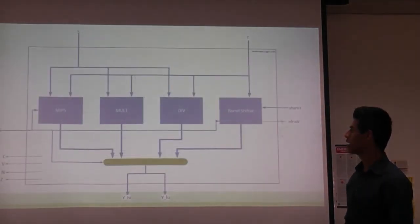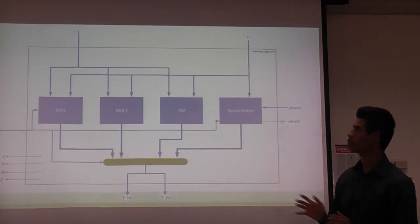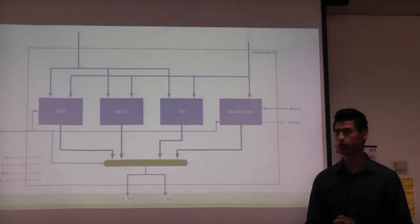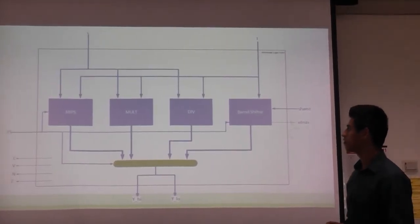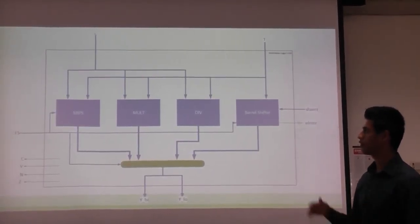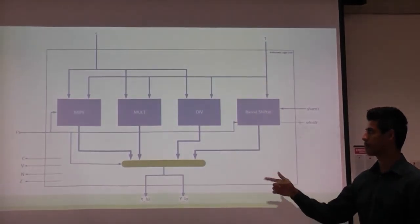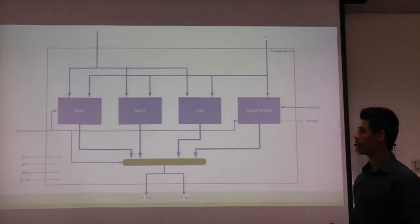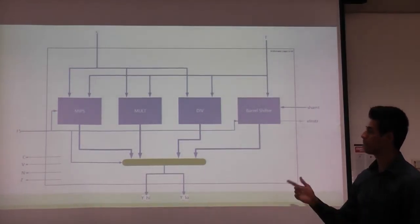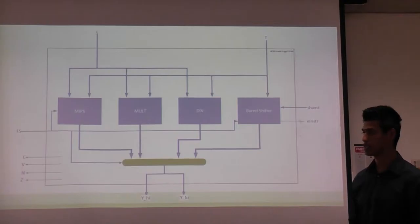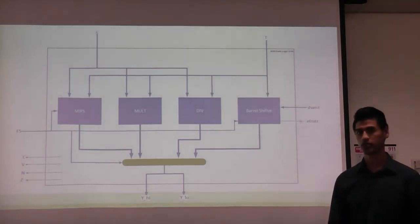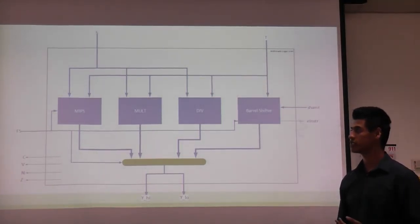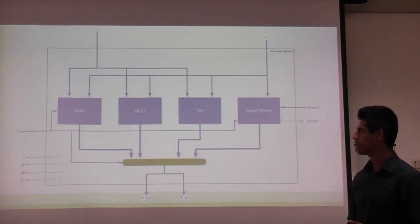Looking into the ALU, it is made up of four main units: the MIPS unit, a multiplier, a divider, and a barrel shifter. The MIPS unit handles most operations, consisting of logic and arithmetic, while the multiplier and divider handle multiply and divide operations.